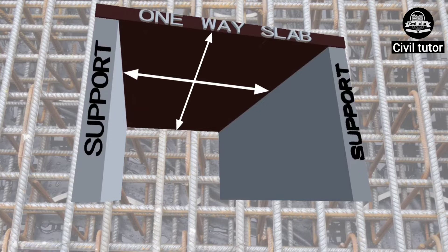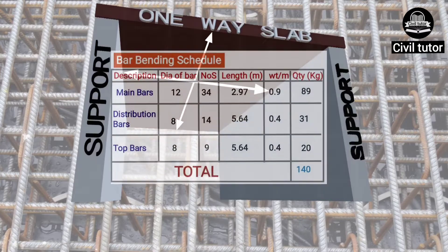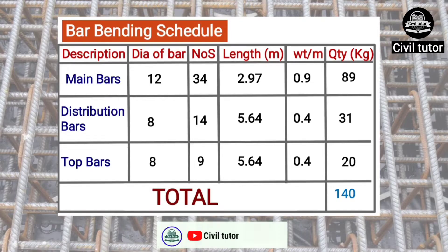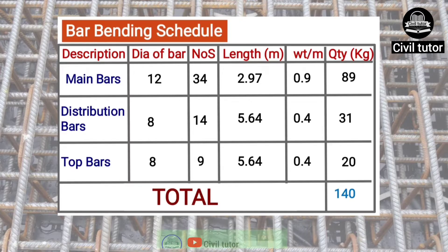I am going to show you how to calculate the steel quantity by illustrating this method with the help of an example. At the end of this lecture, I will show you how to prepare the table for bar bending schedule of a slab. Before starting this tutorial, if you haven't subscribed to my channel, please subscribe and don't forget to press the bell icon so that you don't miss any updates in future.